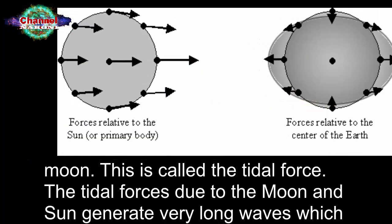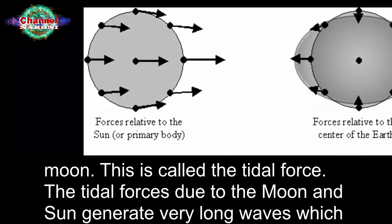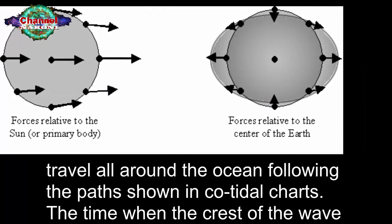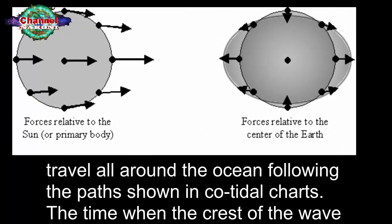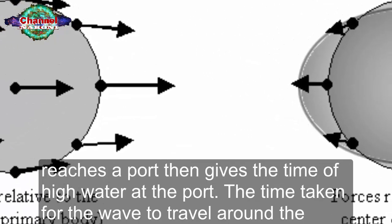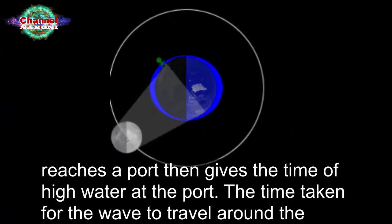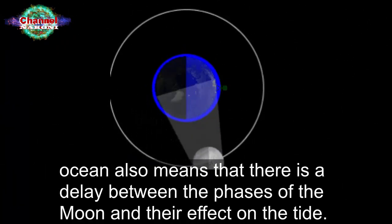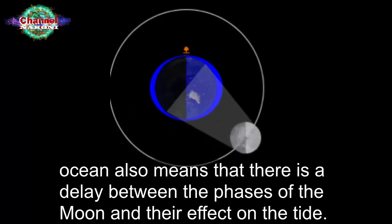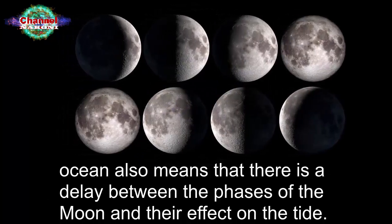The tidal forces due to the moon and sun generate very long waves which travel all around the ocean, following the paths shown in co-tidal charts. The time when the crest of the wave reaches a port then gives the time of high water at the port. The time taken for the wave to travel around the ocean also means that there is a delay between the phases of the moon and their effect on the tide.